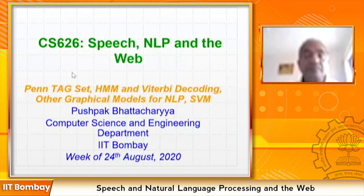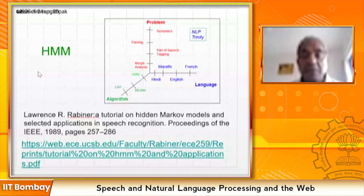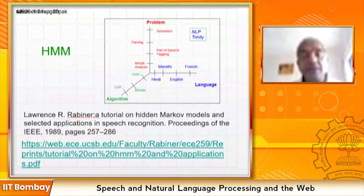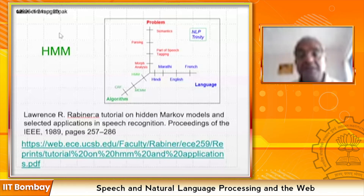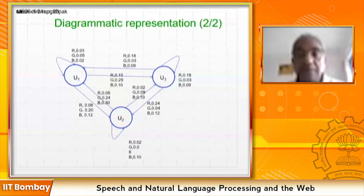Hidden Markov model was the technique used for part of speech tagging. To remind you, the hidden Markov model consists of a set of states, observations, transition matrix, observation probability matrix, and initial probabilities. We took the classic urn example used by everyone who teaches HMM, with observation sequence RRGB BRGR, and using transition and observation probabilities we got a probabilistic finite state automaton.